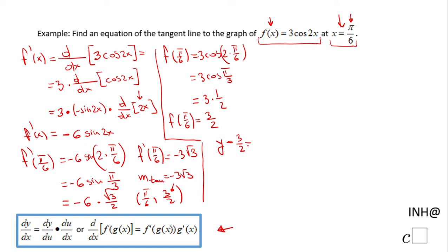equals m, the slope is negative 3√3. Remember, the derivative of f(x) at π/6 was negative 3√3 times x minus x₁, which is nothing else than π/6. This is an equation of the tangent line to this function f(x) at x = π/6.